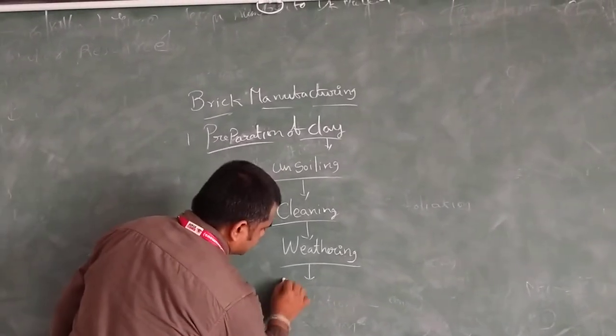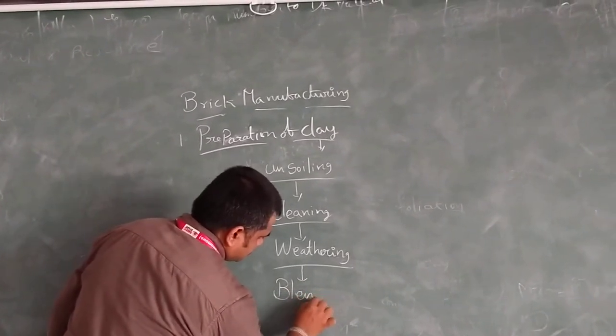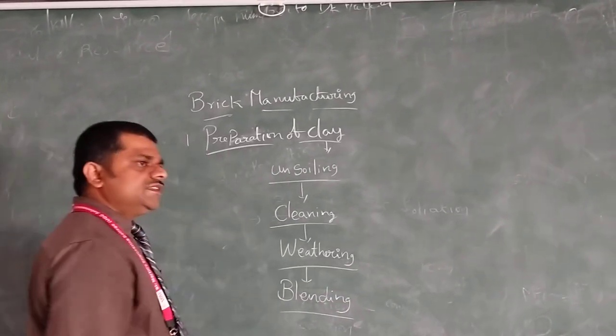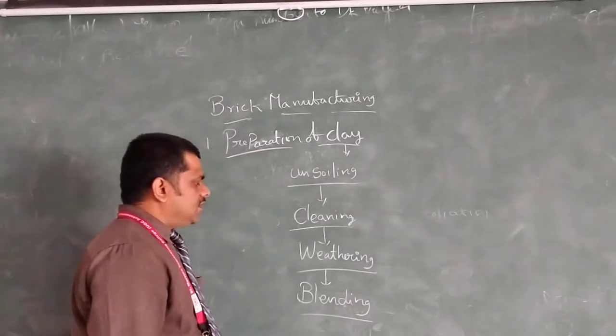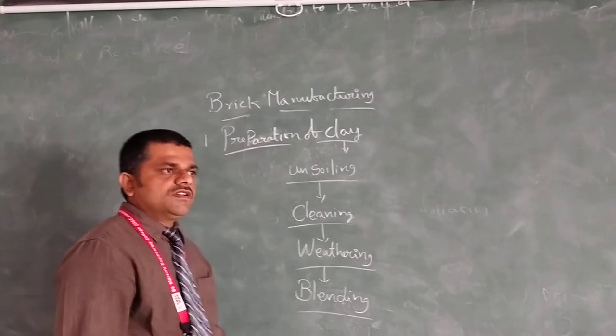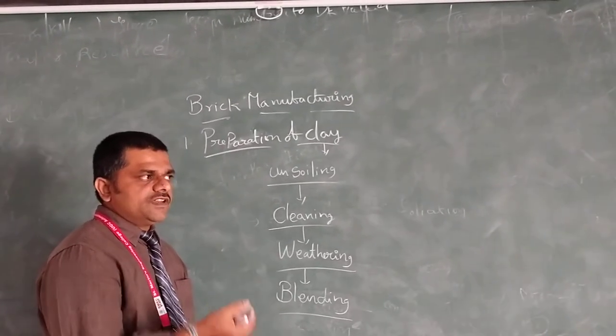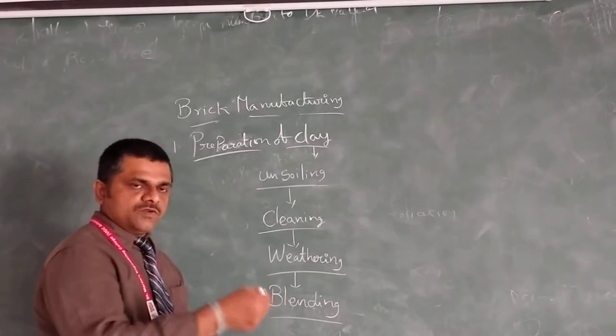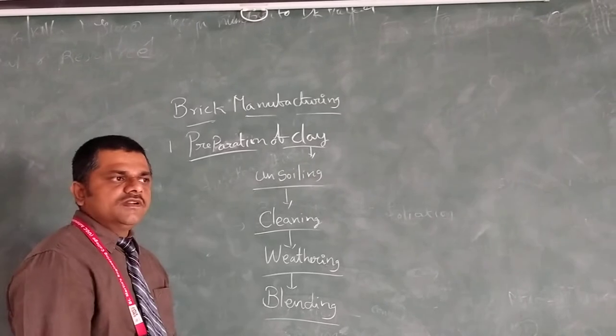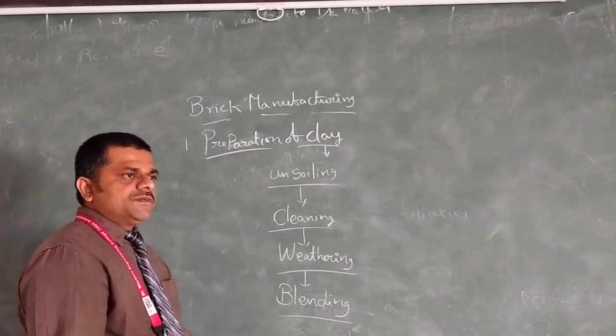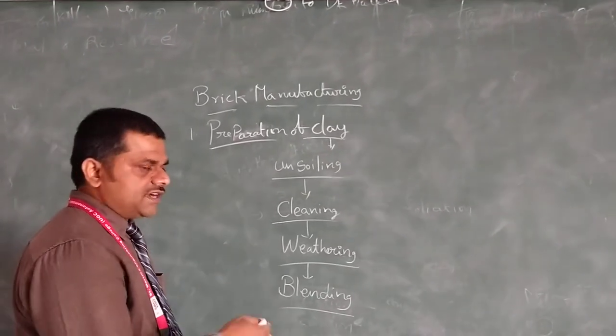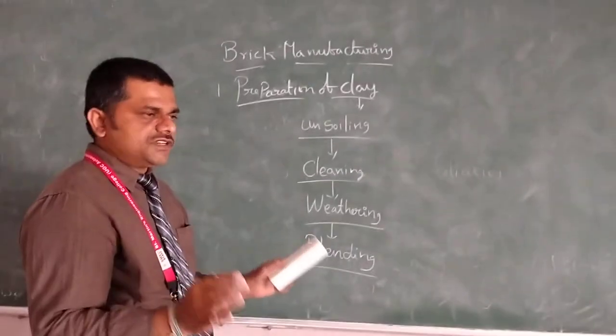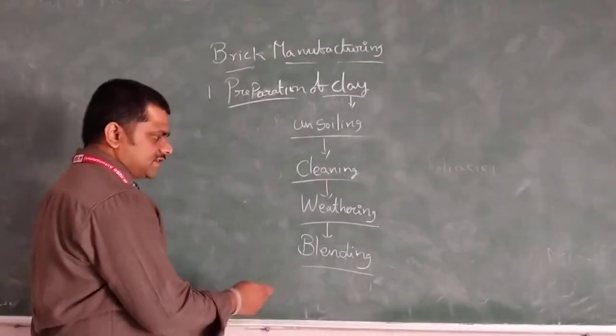After that, blending. In this blending, we have to know about the ingredients percentage. If there is a very less percentage of iron oxide, we have to add some more percentage as per the volume. Sometimes aluminum is less. Ultimately, we have to make a sufficient mixture of material.